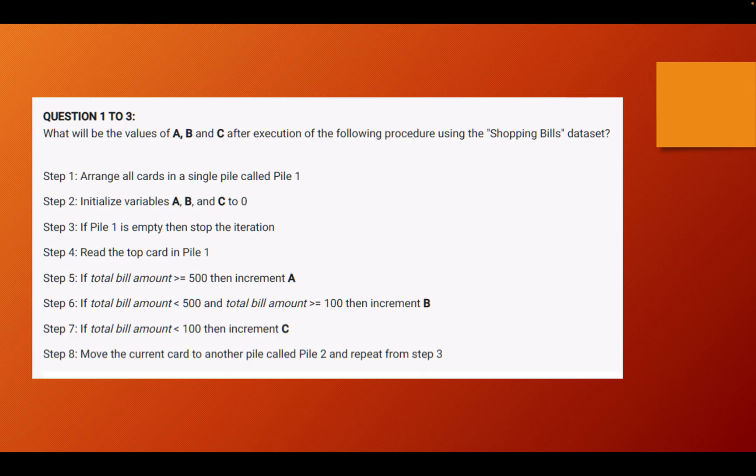This is all going to be a repetition of steps. If you see further down you're going to see the same 4 steps repeating in almost every procedure that we go through. The next step is where we have to actually put a focus on. Step 5 says that if the total bill amount is greater than or equal to 500 then increment A. So what does it mean?